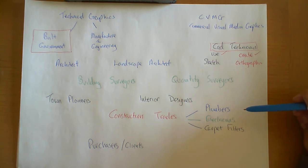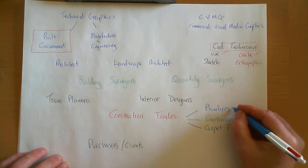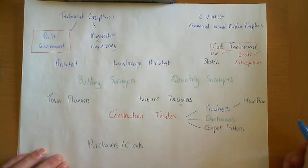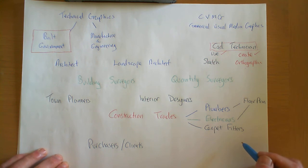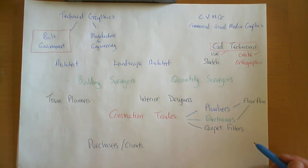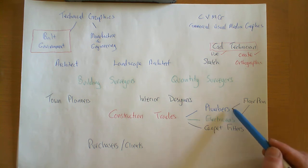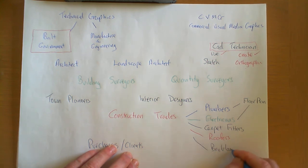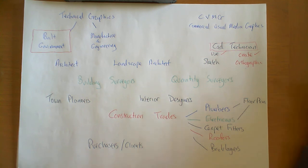A carpet fitter also needs a floor plan, though for a different reason — they need to know the size and layout of the rooms to know where the carpet is going to go. In all these cases these people are users of graphics. There are many other construction trades too: roofers, bricklayers, and a whole list of people involved in constructing a building. We group them all together and call them construction trades.